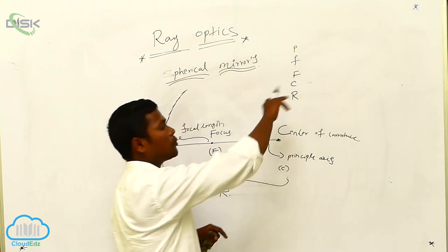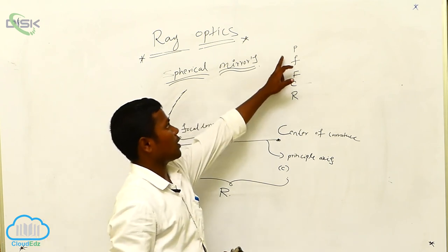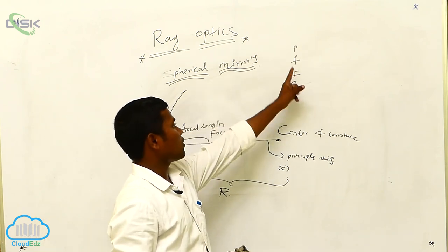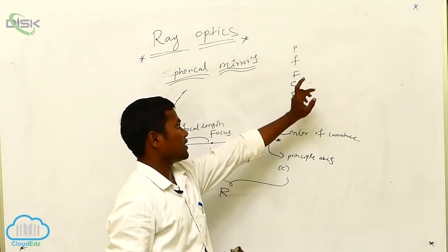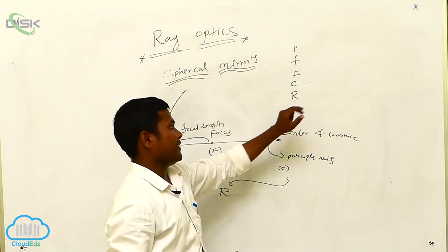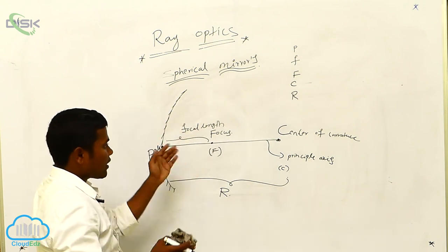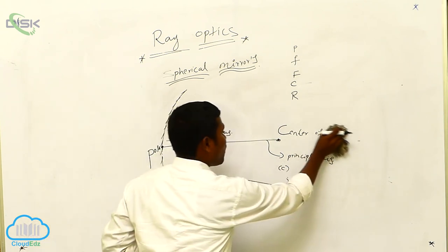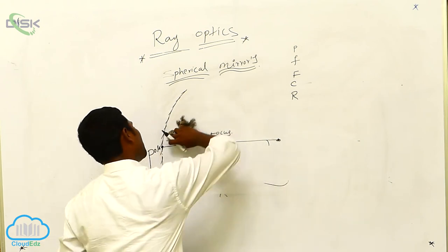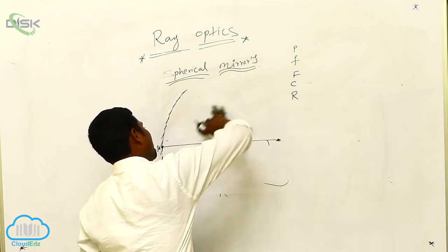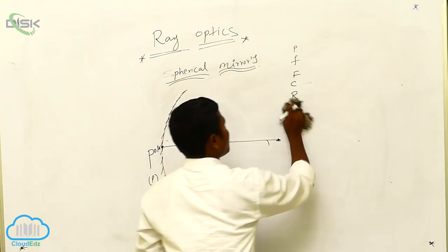These are all very important parameters when solving problems — pole, focal length, focus, center of curvature, and radius. Now, considering the source: if you want to see an object, you need both the mirror and a source.